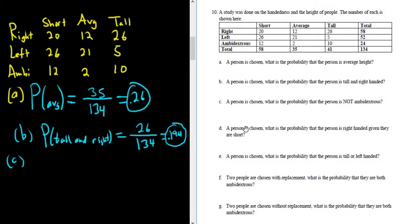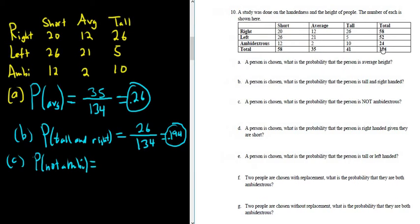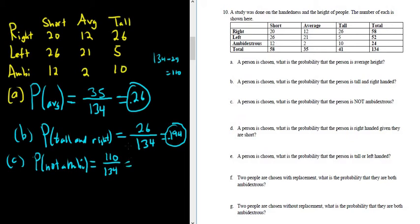Part C. A person is chosen — what is the probability that the person is not ambidextrous? P(not ambi). Maybe the easiest way is to figure out how many people are not ambidextrous. There are 24 ambidextrous people and 134 people total, so that leaves 134 minus 24, which is 110 people that are not ambidextrous. So 110 over 134 is 0.82.